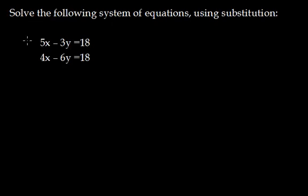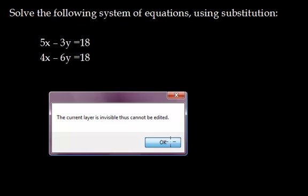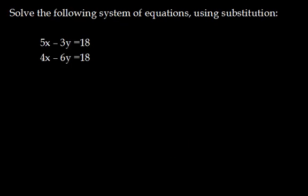And if I divide equation 2, oh, sorry. Okay, so if I, let's call this equation 1, call this equation 2. And if I take equation 2 and I divide it by 2, I'm going to end up getting 2x minus 3y equals 9.